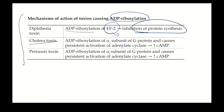Cholera toxin causes ADP ribosylation of the stimulatory alpha subunit (alpha-S) of G protein. This leads to persistent activation of adenylyl cyclase, which causes persistent production of cyclic AMP. This activates the CFTR channel, causing chloride to go out — and water follows — which is the basis of the secretory diarrhea caused by cholera.